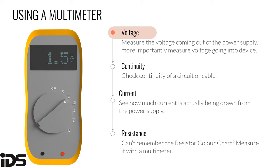Don't forget to move the plug back after measuring current, or you'll blow the fuse when measuring voltage next time — even experienced technicians do this. To measure resistance, turn the dial to the ohms symbol and place the probes on either side of the resistor to read its value. There is a practical video to show you how to use a multimeter next.